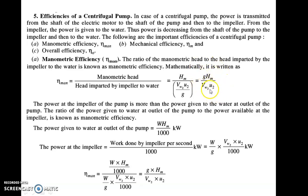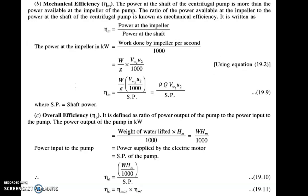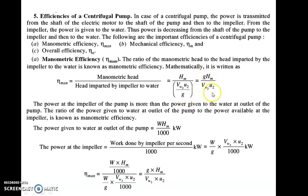You have to remember that manometric efficiency is given by the formula G HM upon Vw2 U2 for the centrifugal pump. Mechanical efficiency is associated with impeller power and shaft power. Shaft power is the maximum and impeller power is less than shaft power, so mechanical efficiency is the ratio of impeller power to shaft power. It is given by Rho Q into Vw2 U2 upon shaft power. Remember: mechanical efficiency is Rho Q Vw2 U2 upon shaft power, and manometric efficiency is G HM upon Vw2 U2.